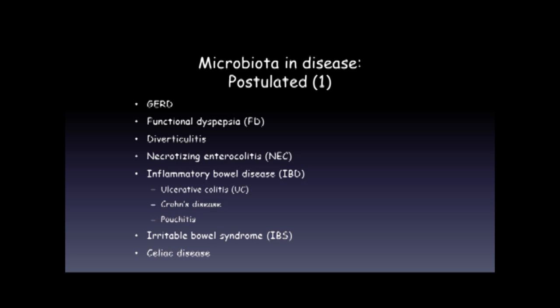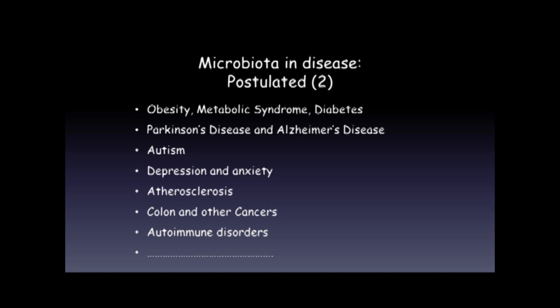We also see claims for a whole variety of other diseases, ranging from obesity, metabolic syndrome, diabetes, neurological diseases like Parkinson's and Alzheimer's, autism, depression, anxiety, atherosclerosis, colon and other cancers, and autoimmune disorders. When we stray into some of these areas, we're often moving more into the hypothetical rather than areas where there's good solid evidence — though there are tantalizing pieces of evidence, largely from animal studies.